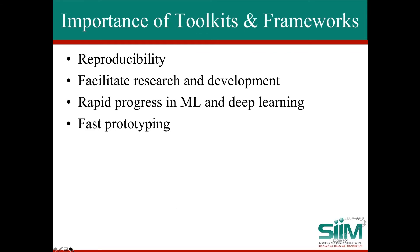One of the important aspects of toolkits and frameworks is that they can encourage reproducibility. If I generate something using TensorFlow, I can share that code and someone else can reproduce that research or experiment. It also allows for more rapid progress in machine and deep learning — I don't have to code a neural network from scratch. And it allows for fast prototyping: if I have data and want to see if I can train a machine learning network, I can prototype that pretty quickly.